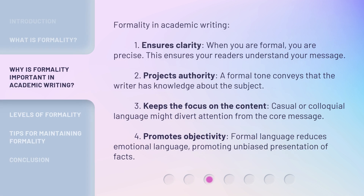Formality in Academic Writing serves four key purposes. First, it ensures clarity — when you are formal, you are precise, and this ensures your readers understand your message. Second, it projects authority — a formal tone conveys that the writer has knowledge about the subject. Third, it keeps the focus on the content, as casual or colloquial language might divert attention from the core message. Fourth, it promotes objectivity — formal language reduces emotional language, promoting unbiased presentation of facts.